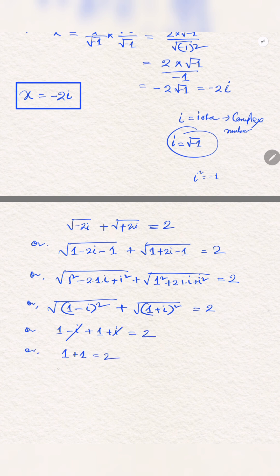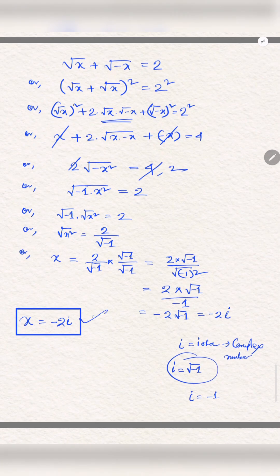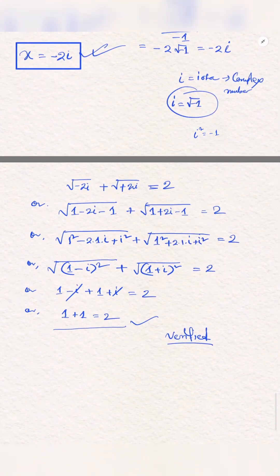So we now eliminate -i and i, so we get the required result and this is verified: the value of x equals -2i.